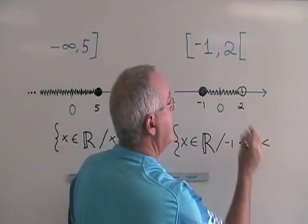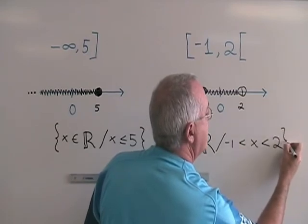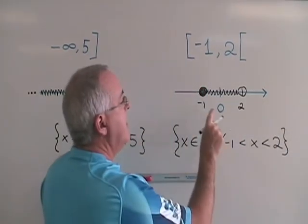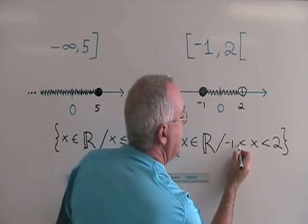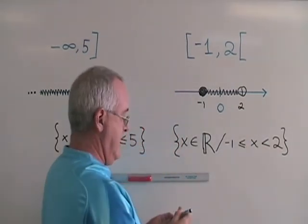Which is less than the upper limit, 2 in this case. And then we close our brace. The negative 1 is included, so it has to be less than or equal to. But the 2 is not included, so I leave that symbol as a less than.